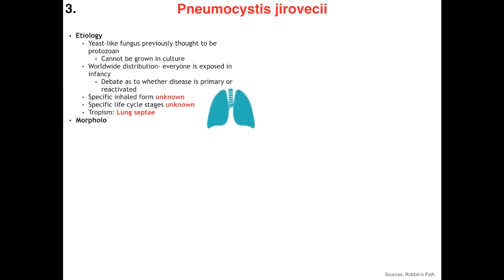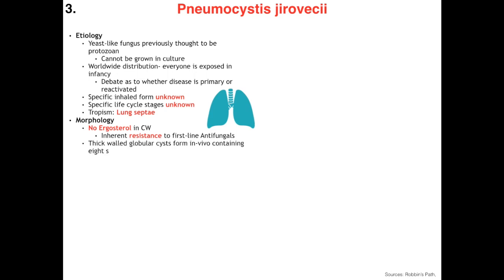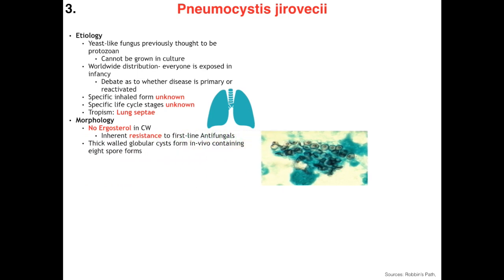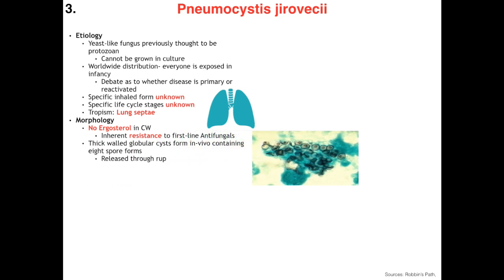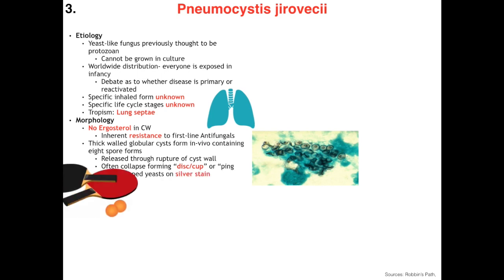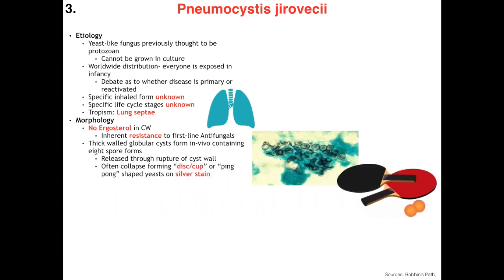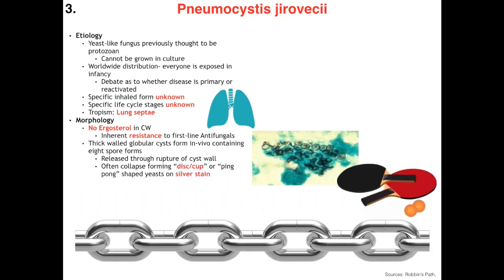Morphologically, the main thing to remember is that he has no ergosterol in his cell wall — unlike any other fungus we will learn — which means he has an inherent resistance to our first-line antifungals. He has thick-walled globular cysts which form in vivo and contain his spore forms, released upon rupture of the cyst wall. These cysts often collapse forming a disc or cup-like shape, sometimes described as a ping-pong ball. The diagnostic gold standard is the silver stain.